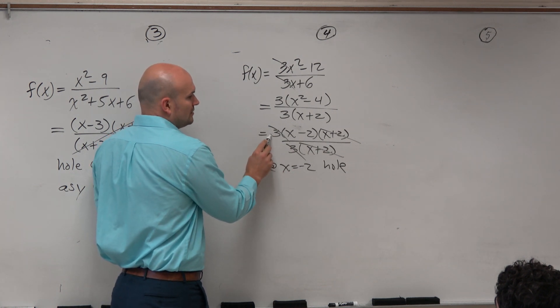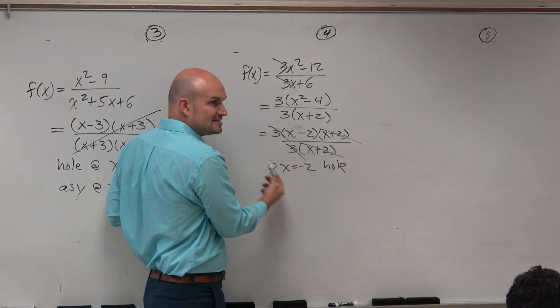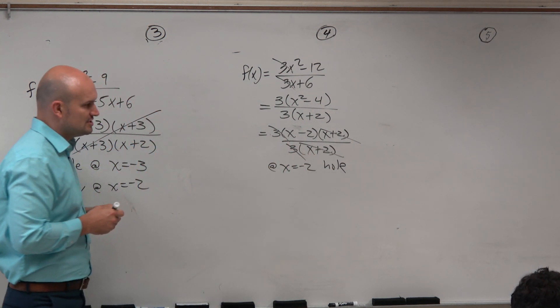So a lot of people will just say, oh, well, 3 is a hole. Yeah, it gets divided out, but it's not a hole. It's not a discontinuity. So there's only one discontinuity here, which is at negative 2.